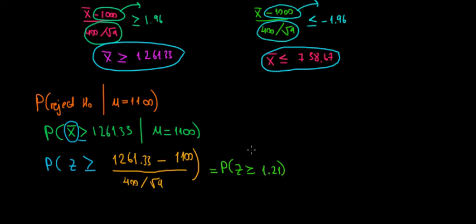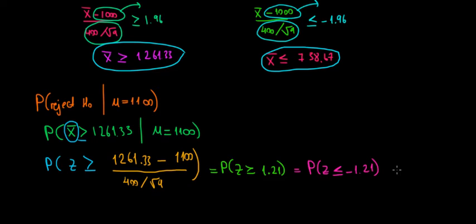Recall that in the Z distribution table, values are given as less than or equal to a number. So we use the symmetry of the Z distribution: this is equal to the probability that the Z score is less than or equal to minus 1.21.